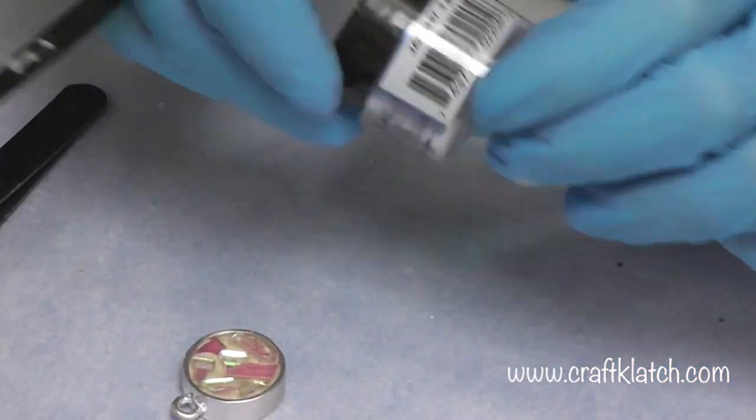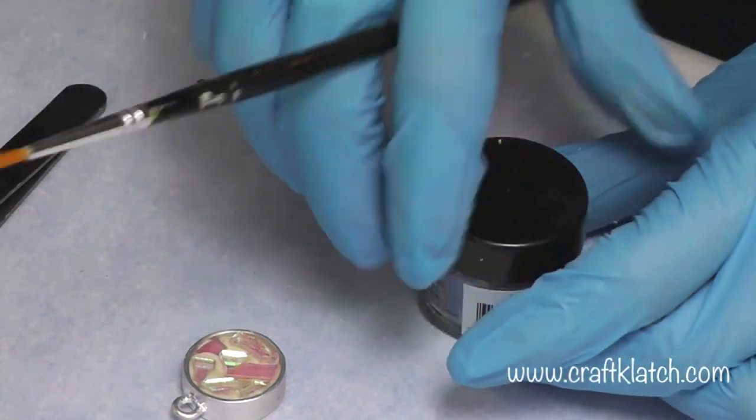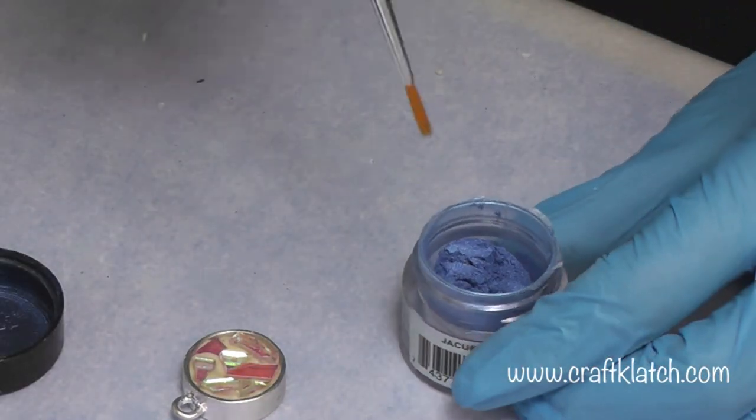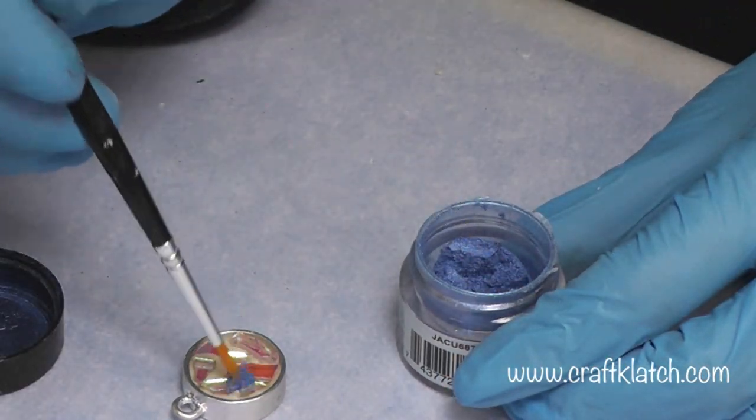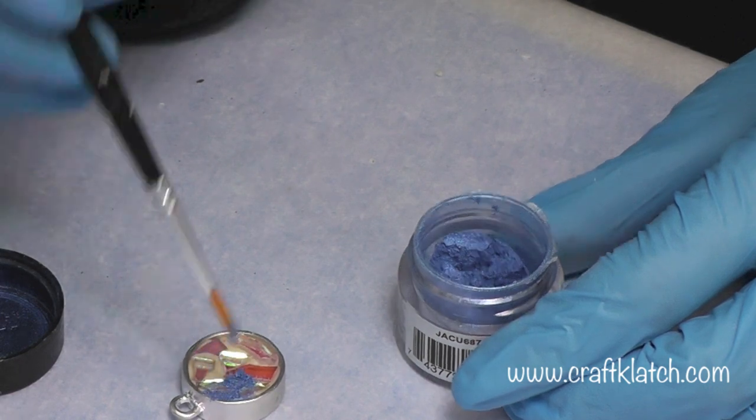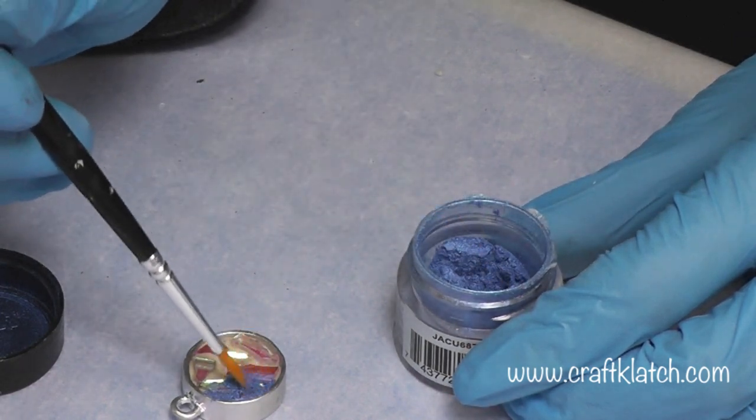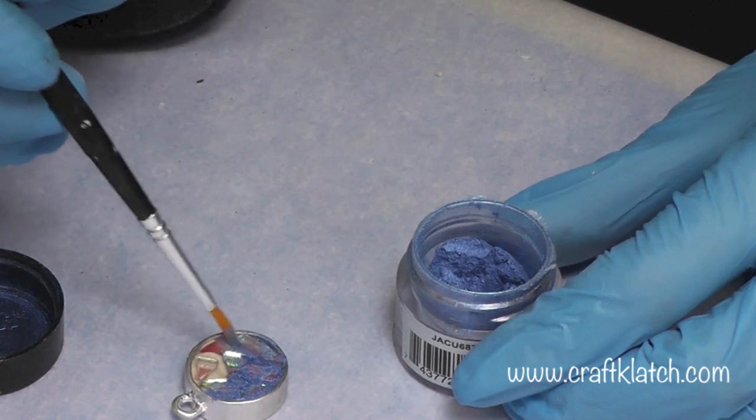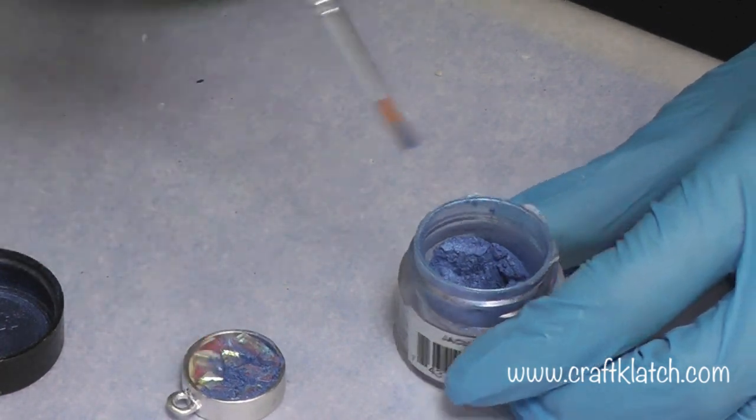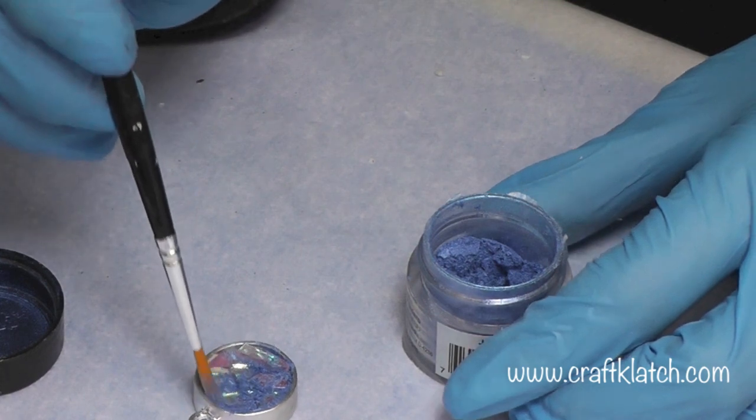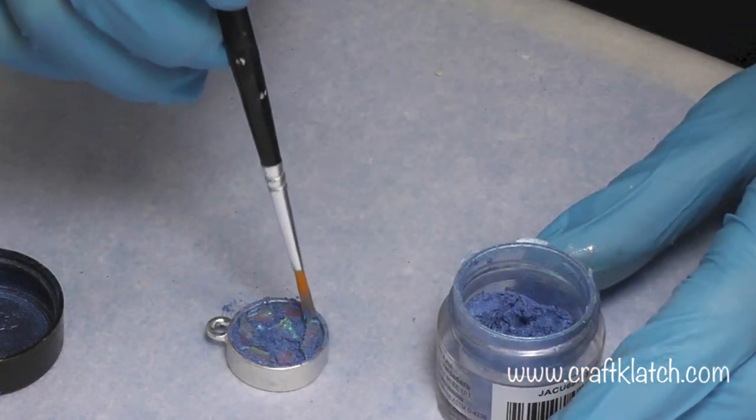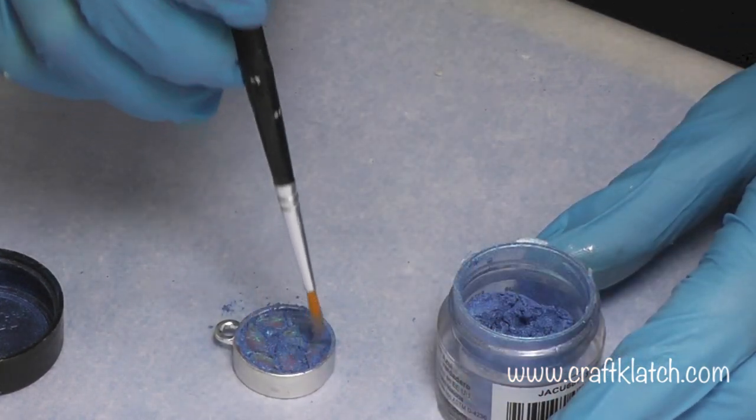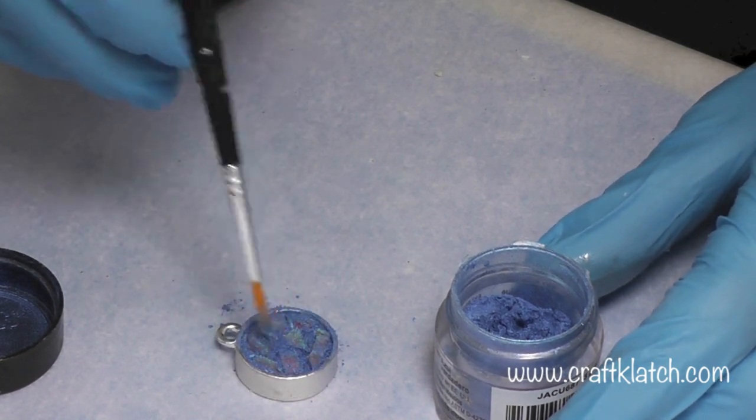What we do want to do is add some pigment powder. I have this dark blue that I think will kind of offset that color really pretty. I'm going to just cover the whole thing here with the pigment powder. Now the pigment powder is going to attach itself to the clay and it will become permanent. Now we're just going to let this set.